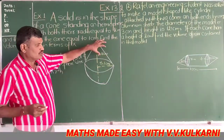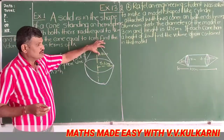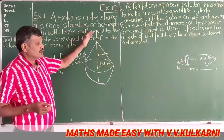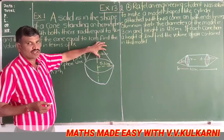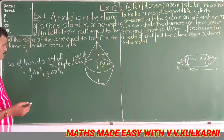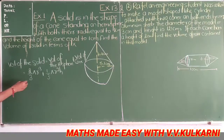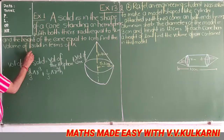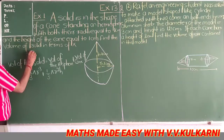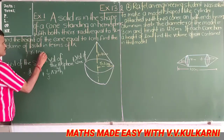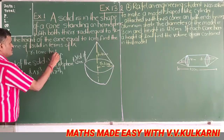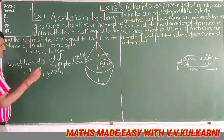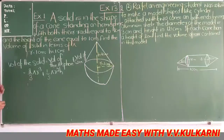Hemisphere ke upar cone ko rakha hai. Isliye total volume agar aapko chahiye, to hemisphere ka volume plus cone ka volume aapko add karna padega. And that is what I have done here. But radius given to you is 1 centimeter and height given to you is 1 centimeter. Let us put this value here and see what we get.